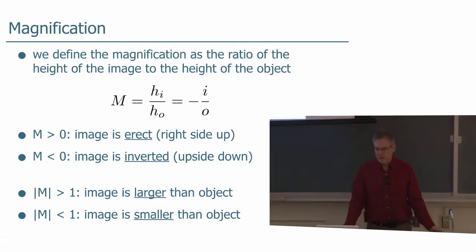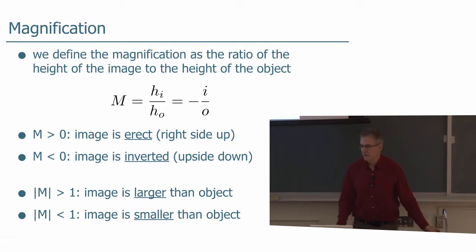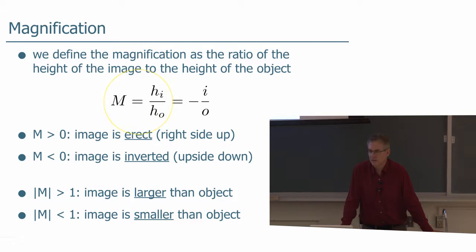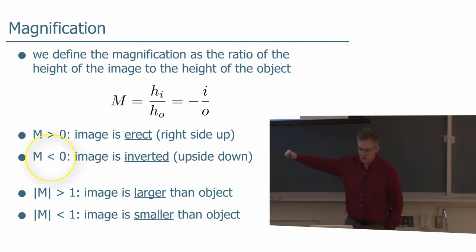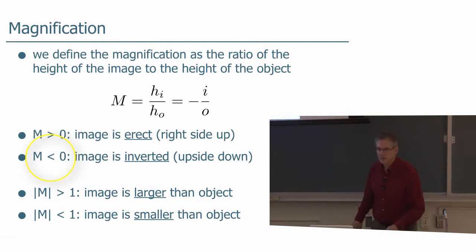What about magnification? As we can see with Ernie, the size of the image can be different depending on where the object is with respect to the lens. We define magnification as the ratio of the height of the image to the height of the object. The magnification ends up being minus I over O for a thin lens. If M is greater than zero, the image is erect; if M is less than zero, it's inverted.